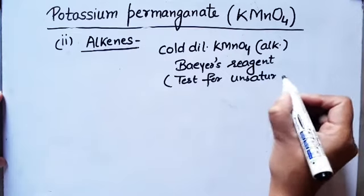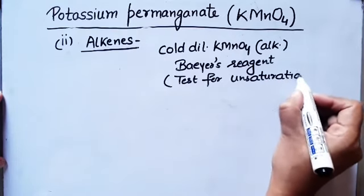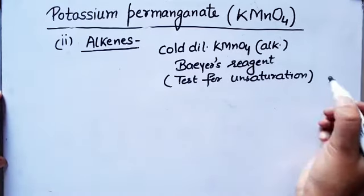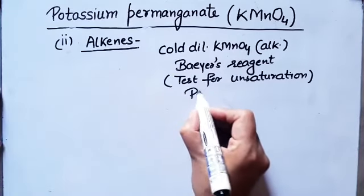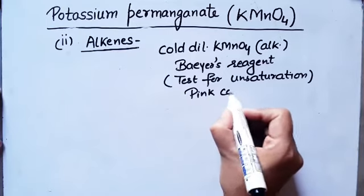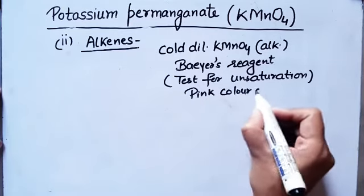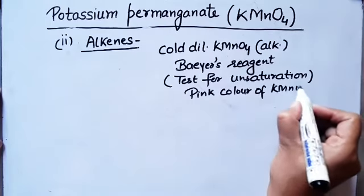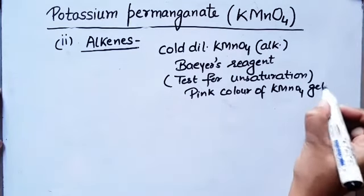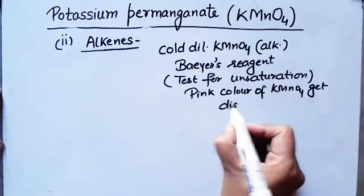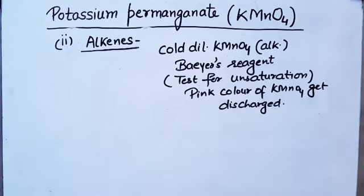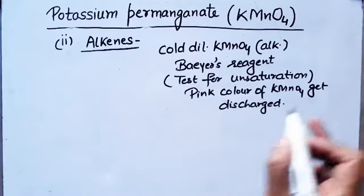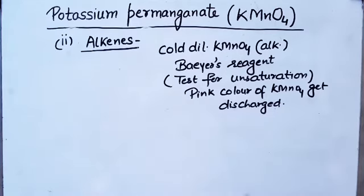If unsaturation is present in a compound and you add cold alkaline KMnO₄ (Baeyer's reagent), then what happens is the pink color of KMnO₄ gets discharged. So cold dilute KMnO₄, i.e., Baeyer's reagent, is used to test unsaturation in a compound.